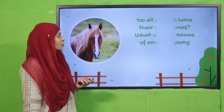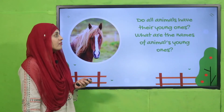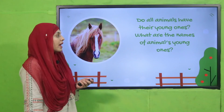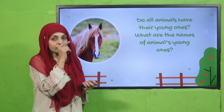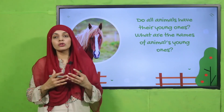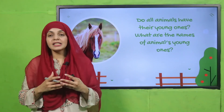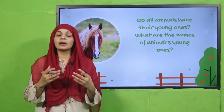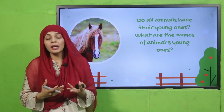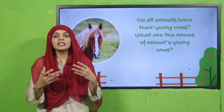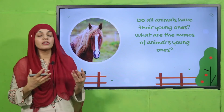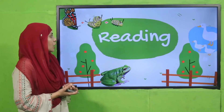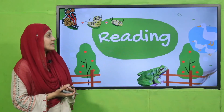Now is the time for a pre-reading question: do all animals have their young ones? Yes. And what are the names of those young ones? For example, a cat's baby is called a kitten, and a butterfly's baby is called a caterpillar. We will now learn the names of young ones of different animals. Let's start the reading — please open page number 143 in your GK2 books.